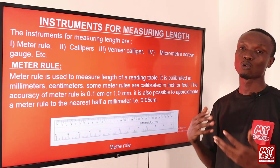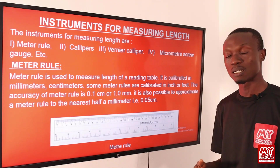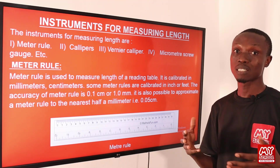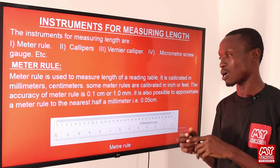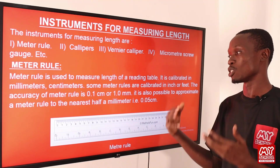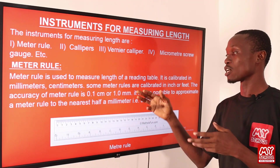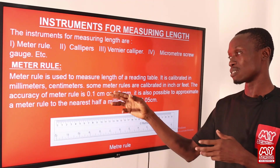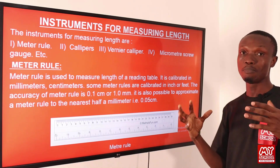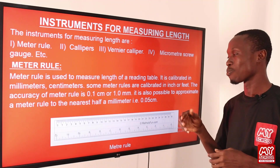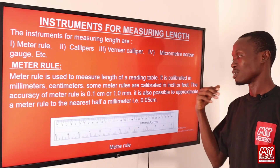Let's begin with the meter rule. If you want to measure such distances as the length of a reading table, we will make use of the meter rule. The meter rule is calibrated in millimeters and also in centimeters, whereas some meter rules are also calibrated in inches or feet. The accuracy of a meter rule is 0.1 centimeter or 1.0 millimeter. If we want to convert from 0.1 centimeter to millimeters, we simply multiply by 10. It is also possible to approximate a meter rule to the nearest half a millimeter, that is 0.05 centimeter, by dividing 0.1 centimeter by 2.